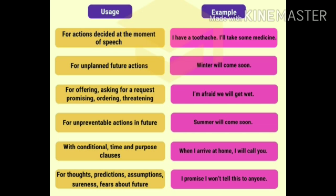Fifth use: when conditional, time, and purpose clauses are used. For example: 'When I arrive at home, I will call you' — meaning when I reach home, then I will call you. Sixth use: for thoughts, predictions (making assumptions), sureness, and fear about the future. For example: 'I promise I won't tell this to anyone' — this is also a future tense. These are all the uses and examples of future tense.